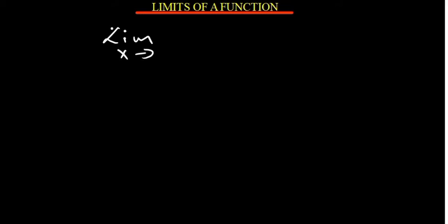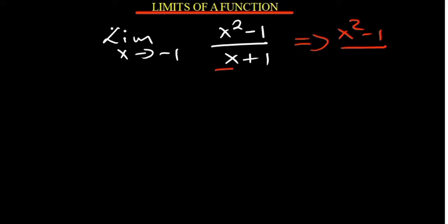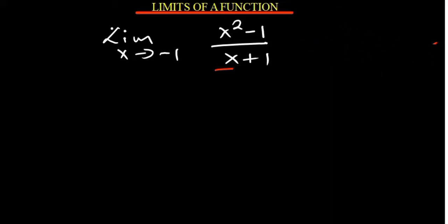There may be some cases where plugging in direct substitution may not work because you may have something that is undefined. For example, let's say you've been asked to determine the limit as x approaches negative 1 for x squared minus 1 over x plus 1. If you plug in negative 1, the denominator becomes negative 1 plus 1, which is 0. Whenever you have that in mathematics, it means it is undefined.